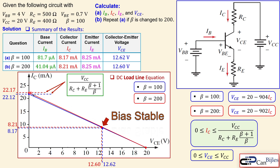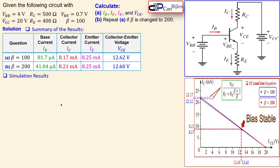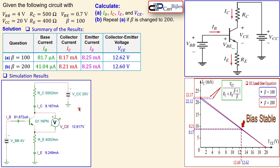Now let's look at the SPICE simulation results. For beta equal to 100, the simulation shows IB approximately 81.7 microamps, IC approximately 8.17 milliamps, VCE approximately 12.62 volts, and IE approximately 8.25 milliamps. All values match our calculations very well.